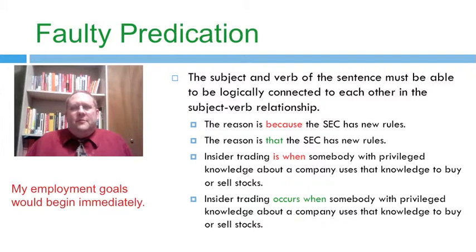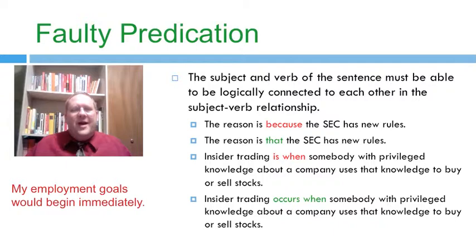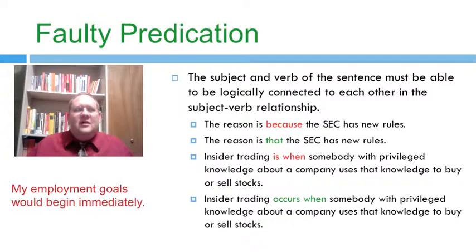Finally, we come to faulty predication, which is one of the most difficult of all these errors to understand. Faulty predication means that your subject and your verb don't go together logically as subject and verb, even if they do go together grammatically. Look at the sentence from the example: 'My employment goals would begin immediately.' No they won't, because goals can't begin. You will begin your employment immediately, but your goals can't begin anything — goals aren't the kinds of things that can begin anything.